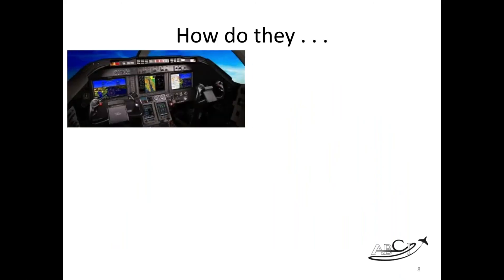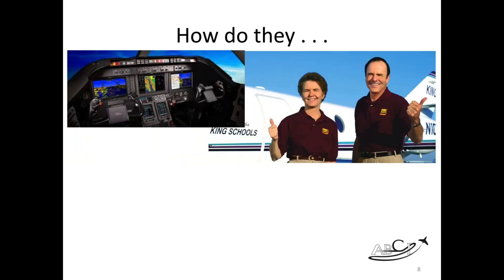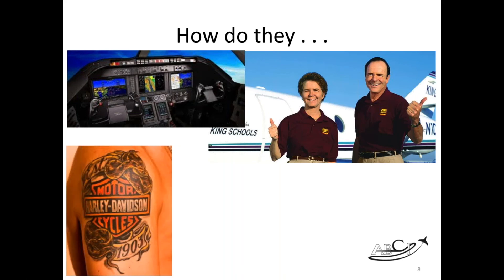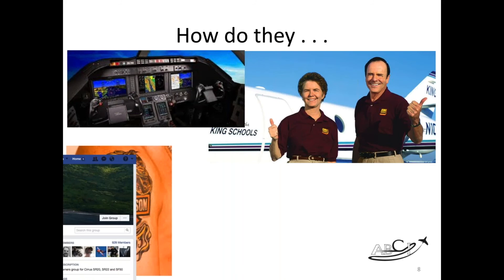How do companies get people to talk about their products all the time? You hear pilots always talking about Garmin — the G1000 is the coolest thing in the world. John and Martha King are some of the most popular instructors, with a following nobody else seems to match. And then there's Harley-Davidson — not an aviation brand, but sharing a lot in common with aviation brands — someone even got a Harley-Davidson tattoo on their arm.